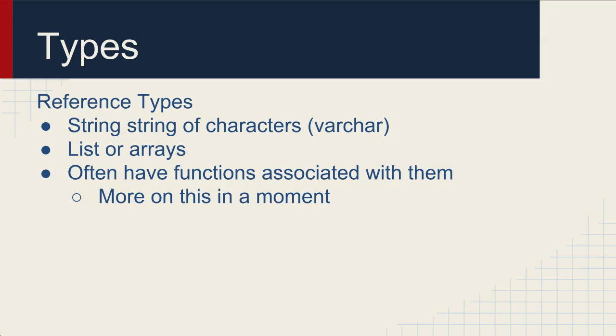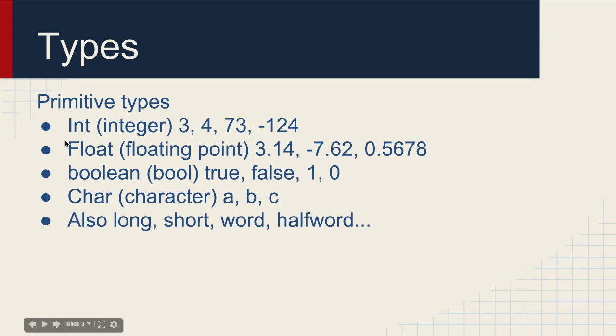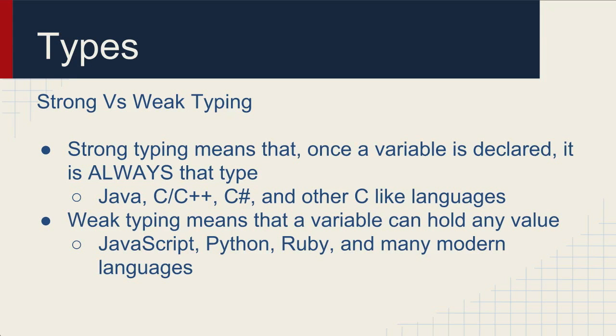I want to talk about typing. There is strong and weak typing. Strong typing means that once a variable is declared, it is always that type of variable. Java, C, C++, C sharp and other C-like languages are strongly typed. Basically what that means is if you've declared something as an integer, it is always an integer. It can't contain 3.14, it can't contain an A, it can't contain true or false. In weak typing, it doesn't matter. Once a variable is declared, it's basically a bucket. Anything you can put in that bucket will go, so you can put numbers, you can put characters. These have pluses and minuses. Weak typing is a little bit more flexible. Strong typing - once something's an integer, you know it's always an integer and it's not going to change to something else.